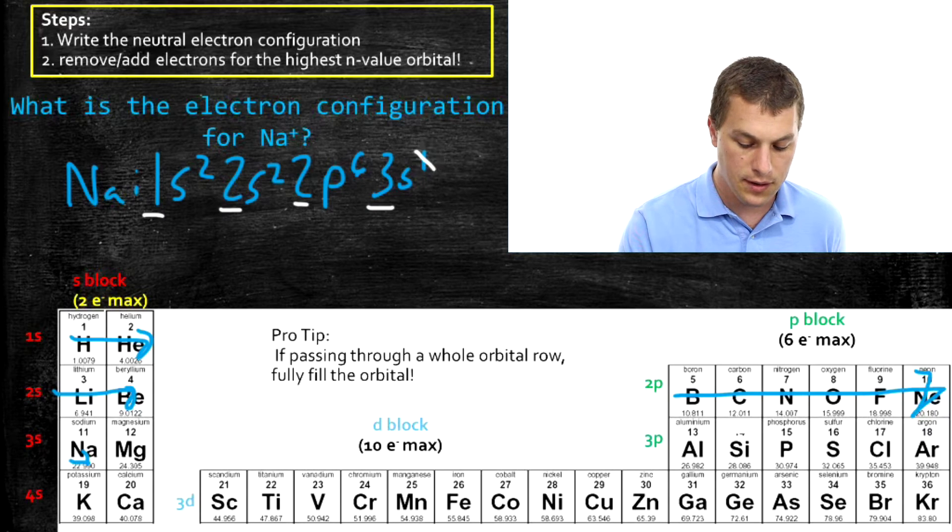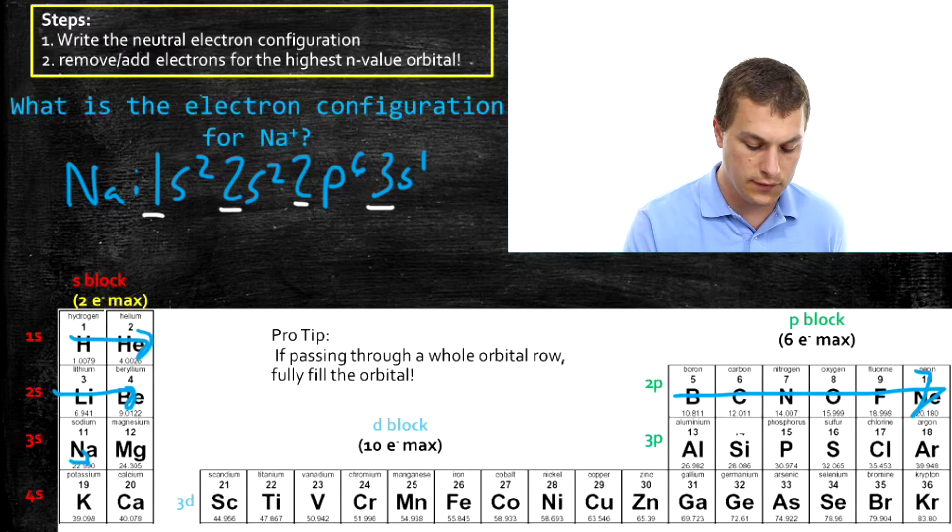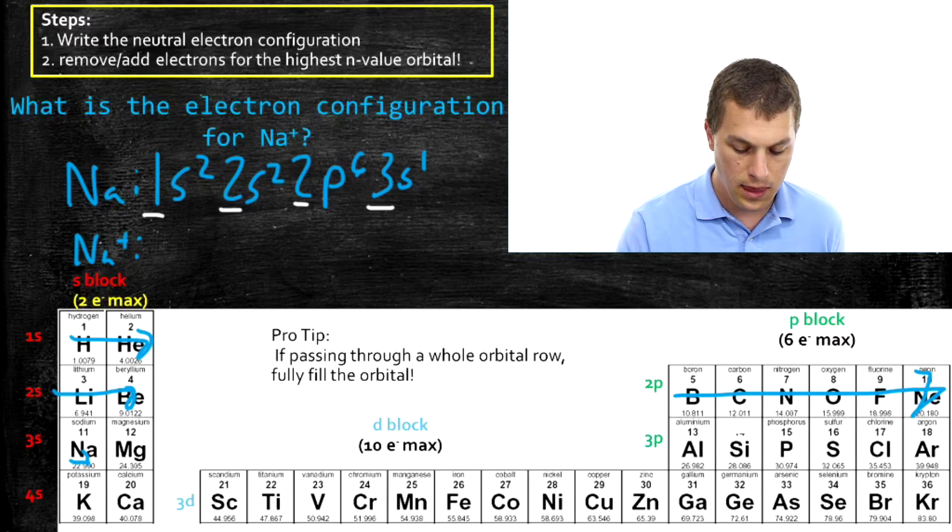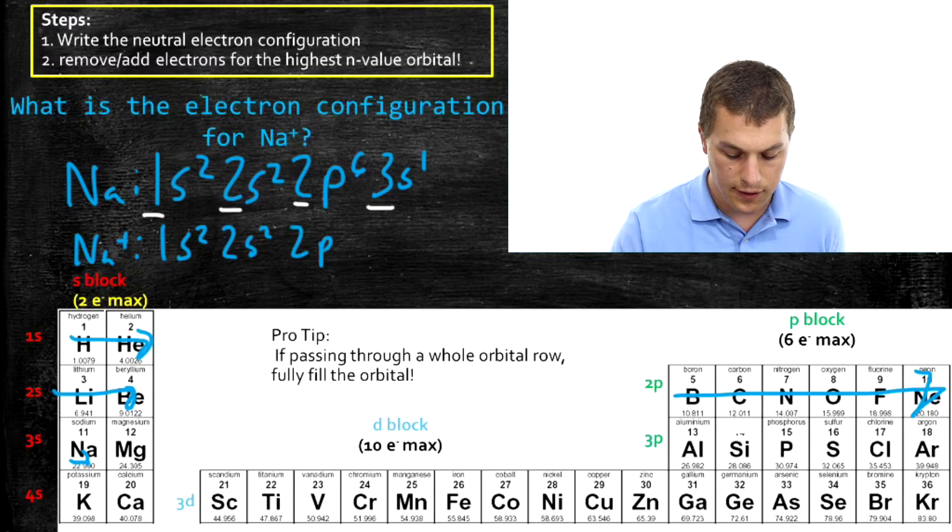And what happens is when I write the electron configuration for sodium plus, I get 1S2, 2S2, 2P6.